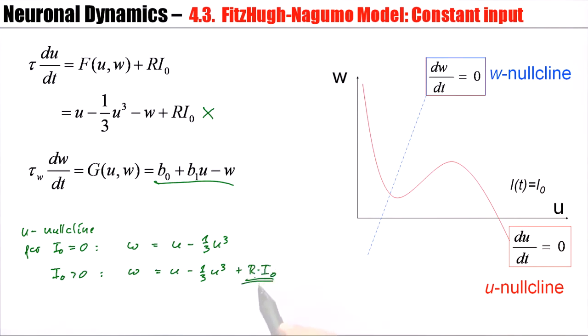Now, what does this mean? This means that the original curve of the u-nullcline is shifted vertically upward if I apply a constant current. So, it's shifted upward.